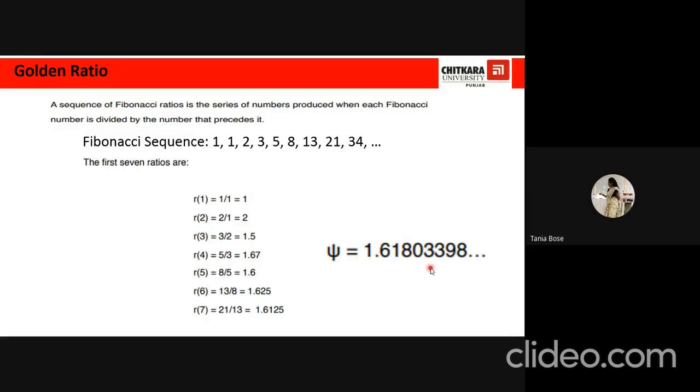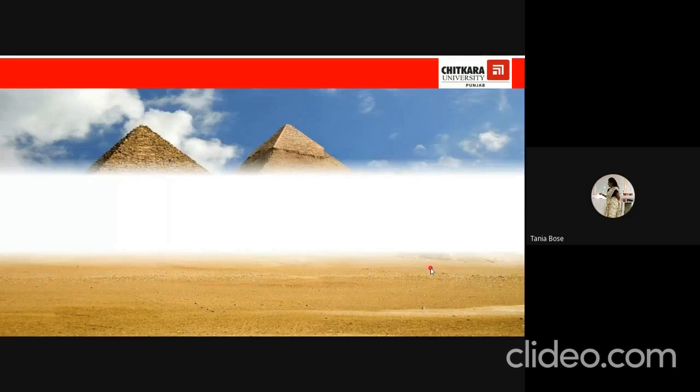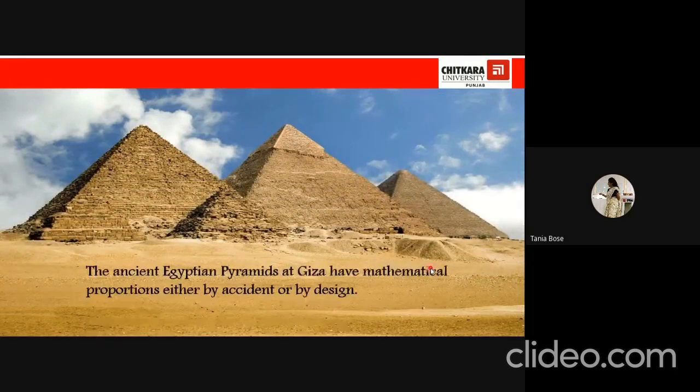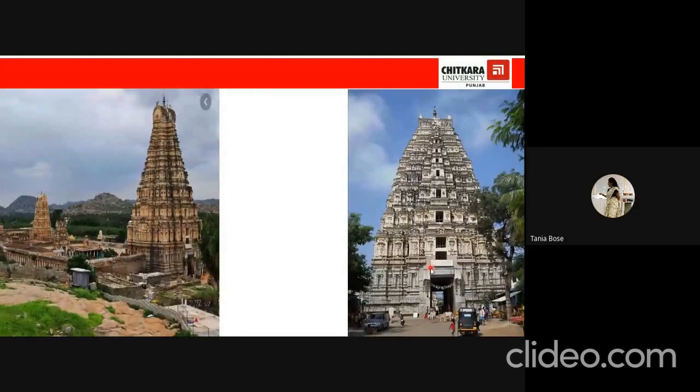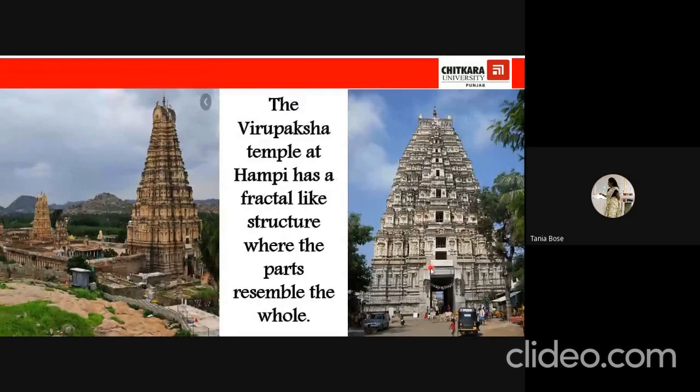So this golden ratio is a powerful tool as it has a geometric interpretation. This aesthetically appealing ratio is found in much human architecture. It makes the work of art appear balanced and beautiful. Then you can see this famous architecture, the ancient Egyptian pyramids at Giza. They have mathematical proportions either by accident or by design.